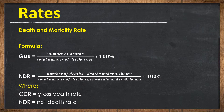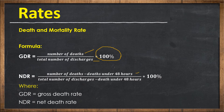Death or mortality rate may be classified as gross or net death rate. Gross death rate (GDR) represents the death rate for all deaths, while net death rate (NDR) represents the death rate excluding deaths under 48 hours after admission. The GDR formula is: number of deaths divided by total number of discharges, multiplied by 100. The NDR formula is: number of deaths minus deaths under 48 hours, divided by total number of discharges minus deaths under 48 hours, multiplied by 100%.